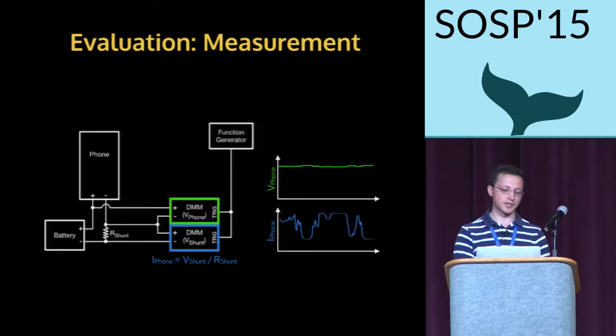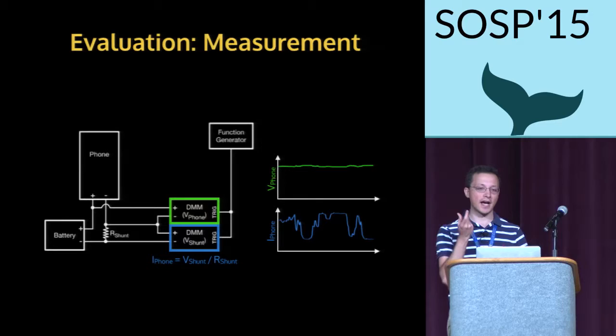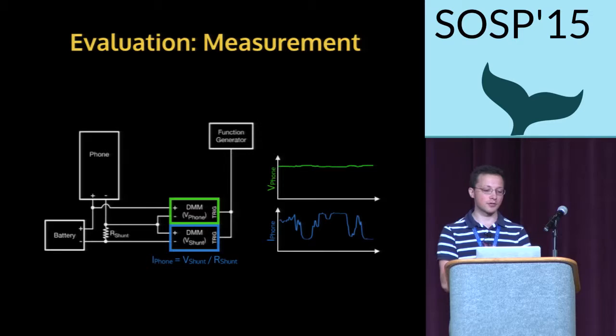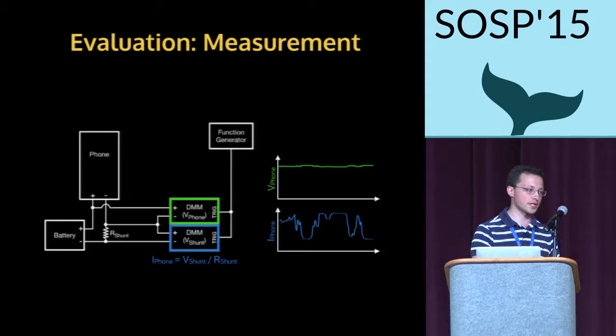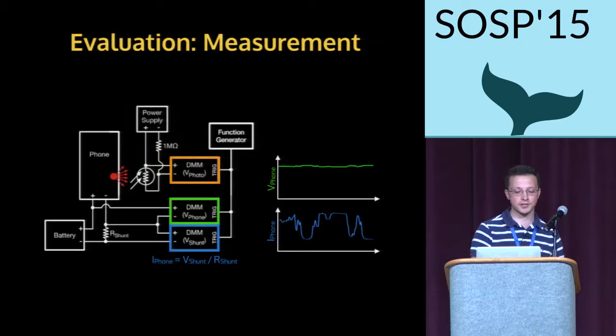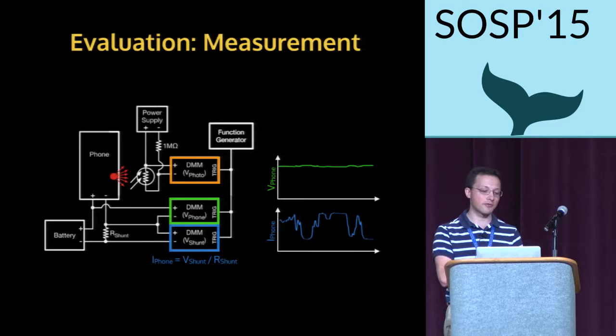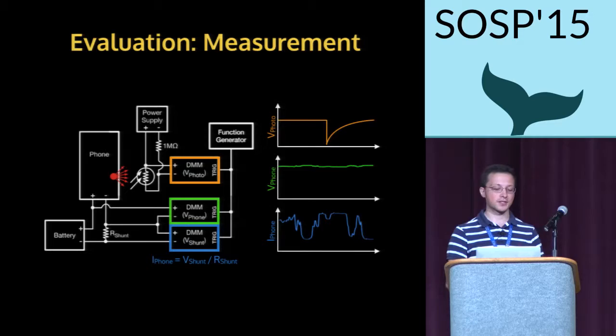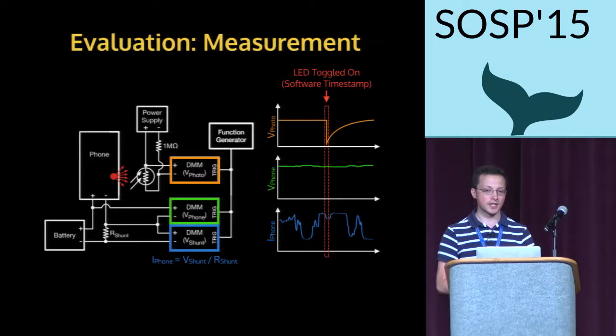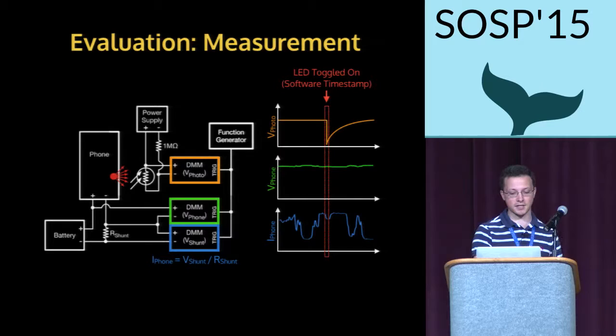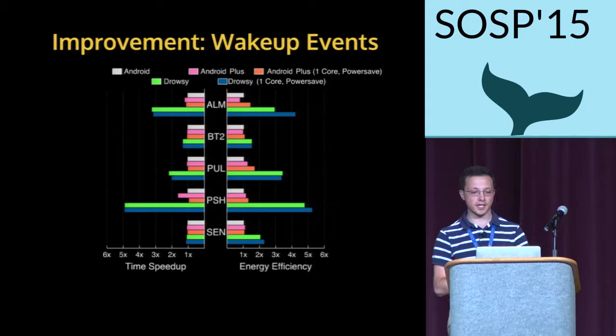The two DMMs are tied to a function generator to trigger them simultaneously and retrieve coherent samples at the host. To measure energy consumption for specific time periods — such as a suspend transition or just task handling — we need an externally measurable signal to synchronize software time with the power trace. To do this, we use the notification LED on the phone, affix a photoresistor on top of it, and tie it back to another digital multimeter. This gives us a software timestamp aligned with an event in the power trace, allowing us to measure energy for each small time period of interest.